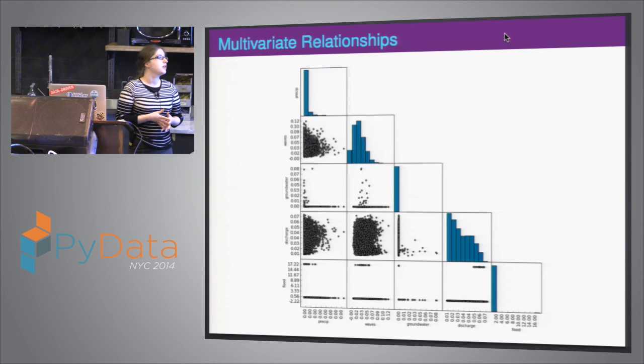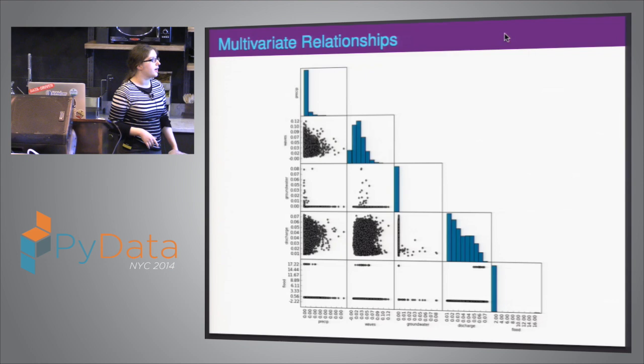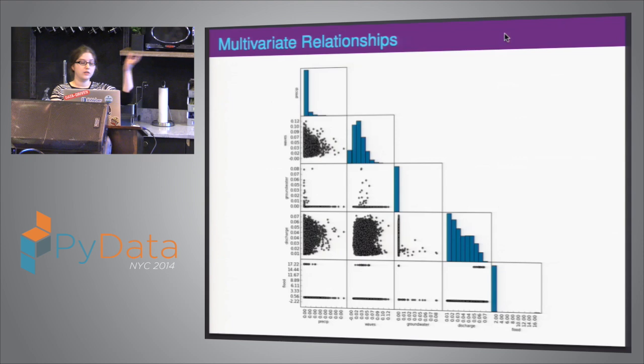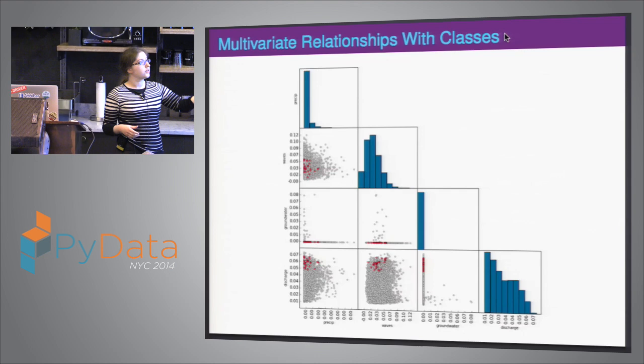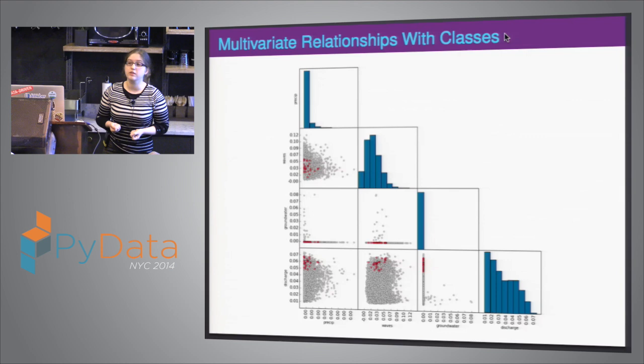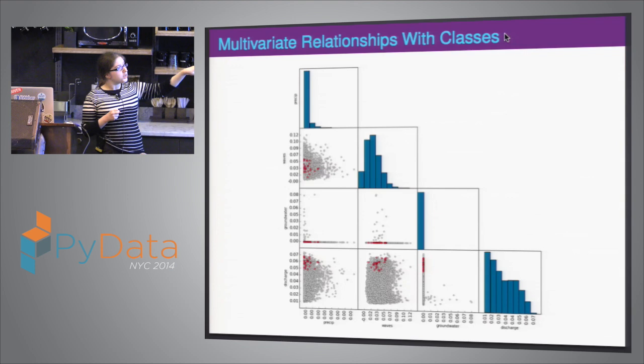First we explore our variables — is anything related to each other? It looks like no. But if we look down at our flood variable, we learn these are bimodal: there's a one, there's a zero, and that's it. So hey, that's a class. Let's recolor our data — we now have class-based coloring. And guess what? All of our floods kind of cluster in one region. We see there is evidence we might be able to do a classifier and it might be effective.